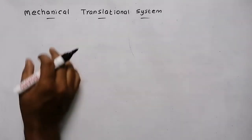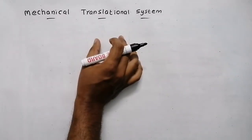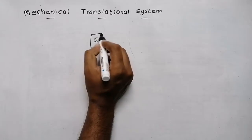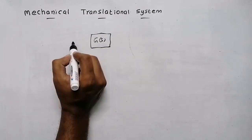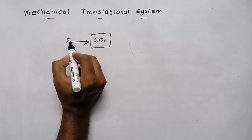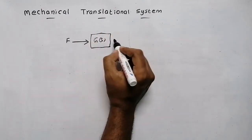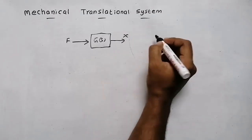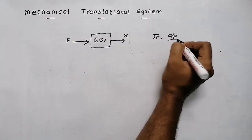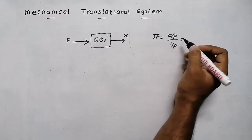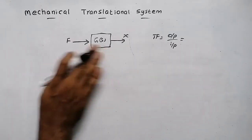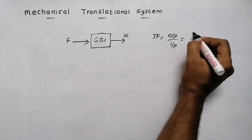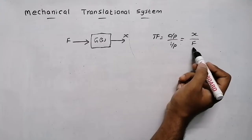In this video we are going to discuss modeling of mechanical translational systems. Suppose this is a system G of S — my mechanical system. If I am going to give an input force, I am going to push this object, then the object will move a certain distance x. So what is my transfer function? Transfer function is ratio of output by input. Input is force and output is displacement, so transfer function is ratio of displacement by force.